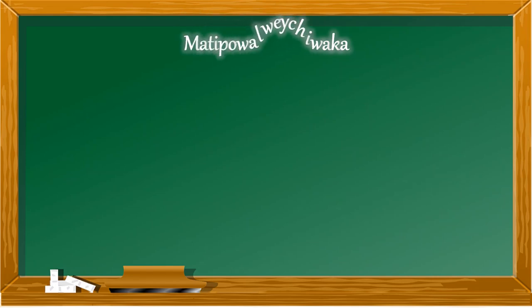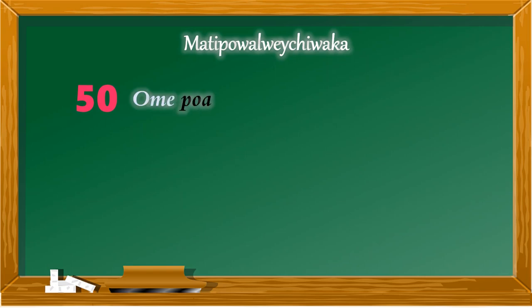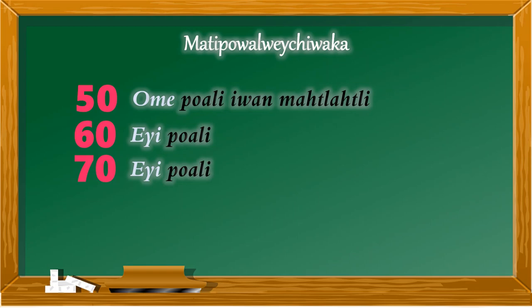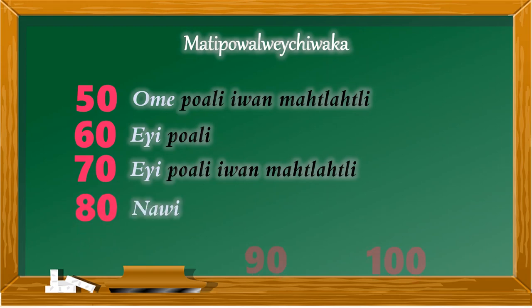Matipogualweichihuaca, conformemos cantidades mayores. Recordemos que el poale equivale a 20, así que para conformar 50 requeriremos 2 de 20 y 1 de 10, quedando ome poale iwamachiknawi. Para el 60 se requieren 3 de 20: eyipoali. Para el 70, 3 de 20 y 1 de 10: eyipoali iwamachiknawi. Para el 80, 4 de 20: nawuipoali.